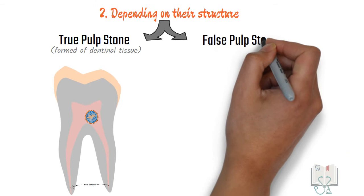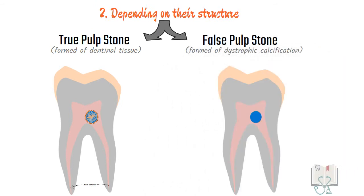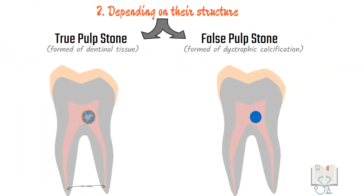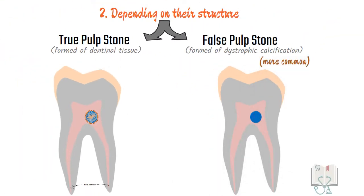And false pulp stones, when pulp stones are not similar to dentine, they appear as concentric layers of calcification. False pulp stones are more common than true pulp stones.